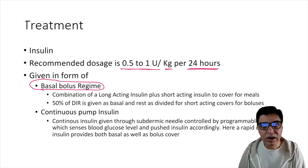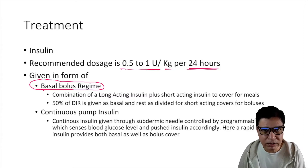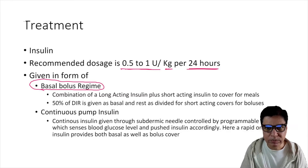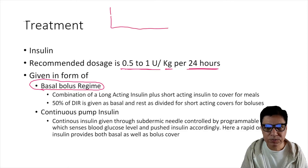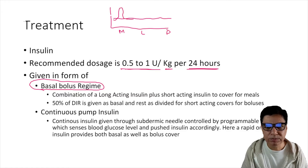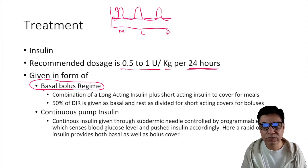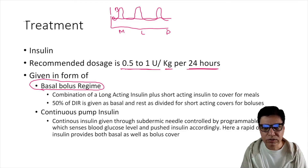In the basal-bolus regime, we replicate this. Basal insulin — typically a long-acting insulin like insulin glargine — is given once in the evening or at night to cover background glucose control over 24 hours. Then short-acting regular insulin is given 15 to 20 minutes before each meal to cover the bolus effect of carbohydrate intake.